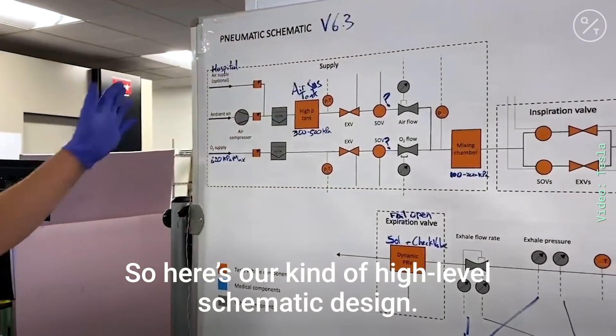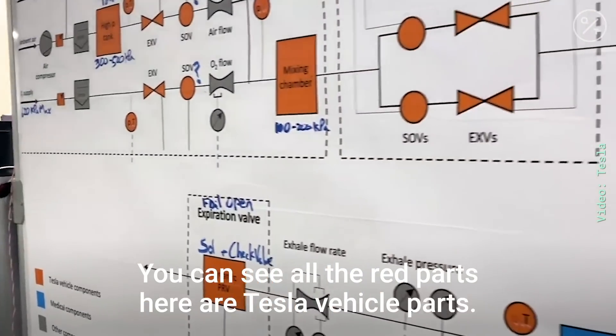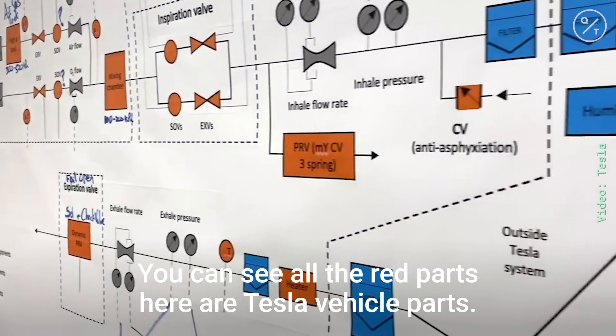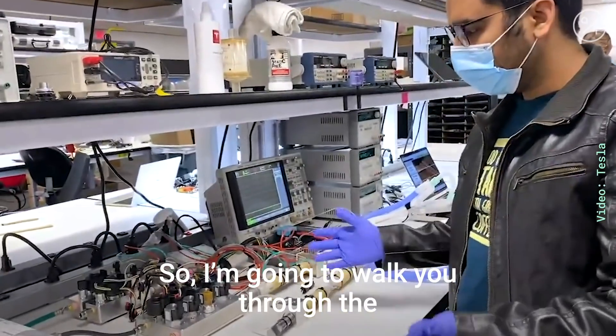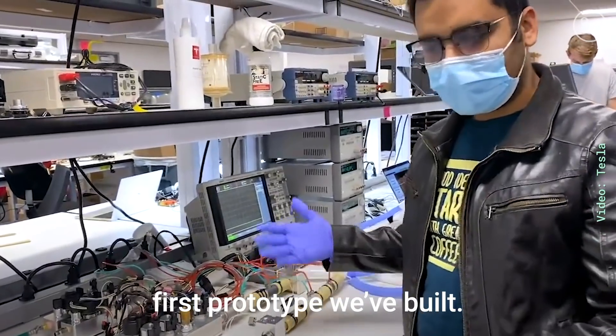So here's our kind of high-level schematic design. You can see all the red parts here are Tesla vehicle parts, so we've used a lot of those. I'm going to walk you through the first prototype we've built.